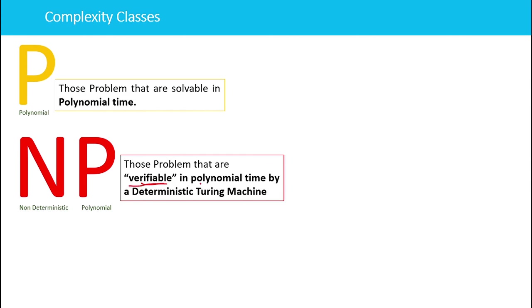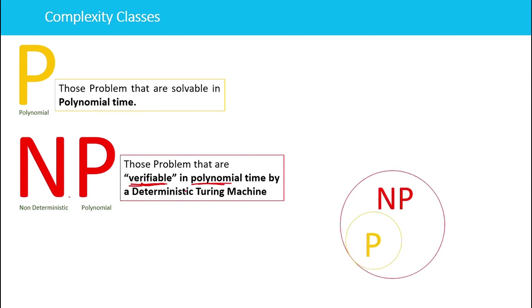Verifiable means: suppose you say the answer to this problem is a certain value — we will be able to verify whether that answer is correct or not in polynomial time by a deterministic machine or algorithm. That is why these are called non-deterministic polynomial problems.